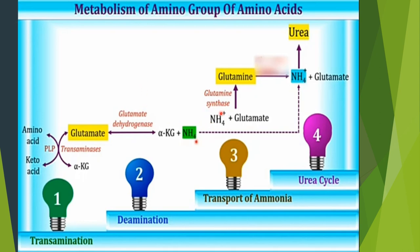The ammonia formed is highly toxic, so it is readily converted into less toxic forms. For instance, ammonium ion combines with glutamate and is converted to glutamine by the enzyme glutamine synthase. Glutamine is then transported via blood and reaches the liver, where it is again broken down into ammonium ion and glutamate.